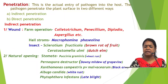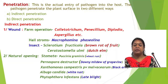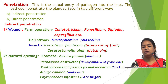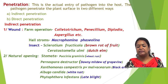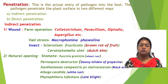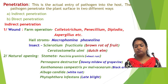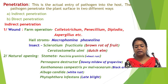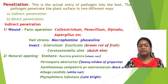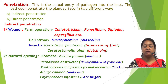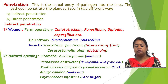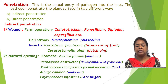After pre-penetration, penetration is the actual entry of the pathogen into the host. The pathogen penetrates the plant surface in two different ways: indirect penetration and direct penetration. Indirect penetration is governed by wounds — wounds created due to farm operations, due to hailstorms, or due to insects.